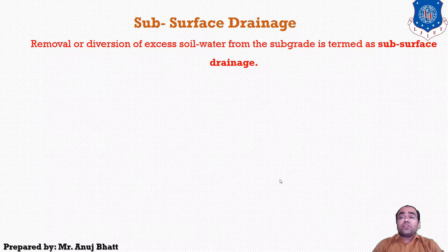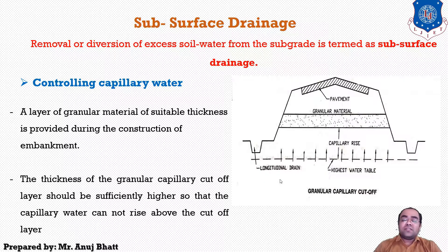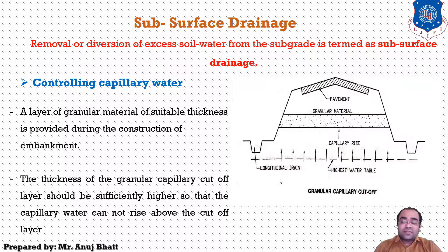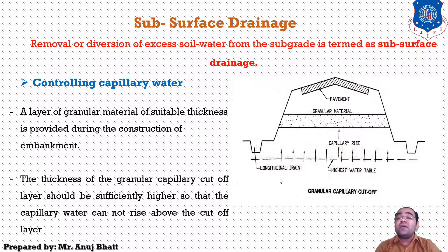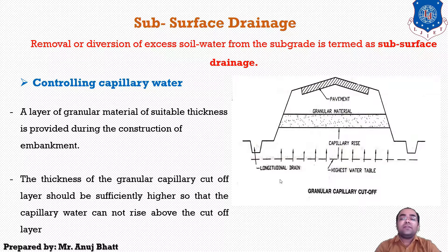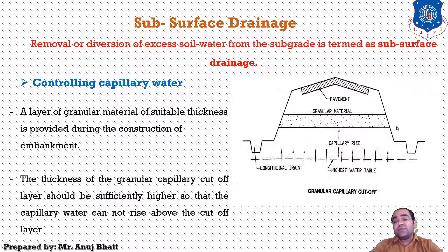The last method is controlling subsurface drainage by addressing capillary water. Instead of lowering the water table, capillary rise is arrested by a few methods. A layer of granular material of suitable thickness is provided during construction of the embankment, between the subgrade and the highest level of the subsurface water table. The thickness of the granular capillary cutoff layer should be sufficiently greater than the anticipated capillary rise within the granular layer, so that capillary water cannot rise above the cutoff layer. Here you can see the granular material provided up to the sub-base layer as a barrier.